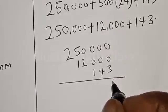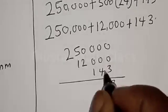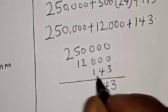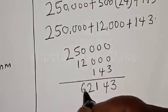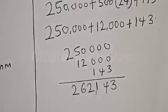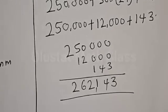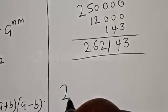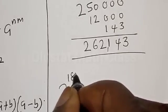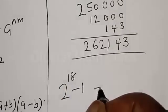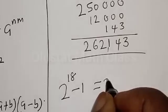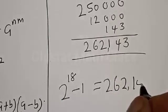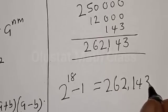Adding digit by digit: 3 plus 0 is 3, 4 plus 0 is 4, 1 plus 0 is 1, then we have 2, then 6, then 2. Therefore our final answer is 2 raised to power 18 minus 1 is equal to 262,143.